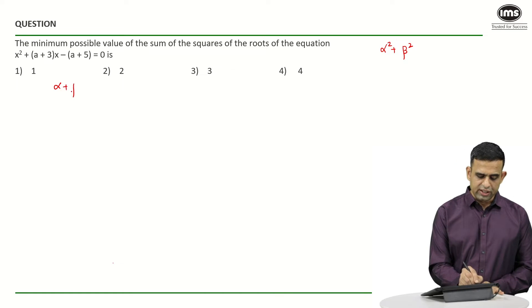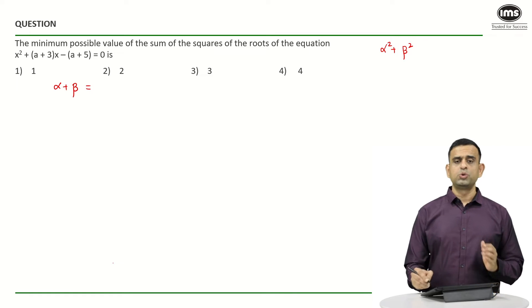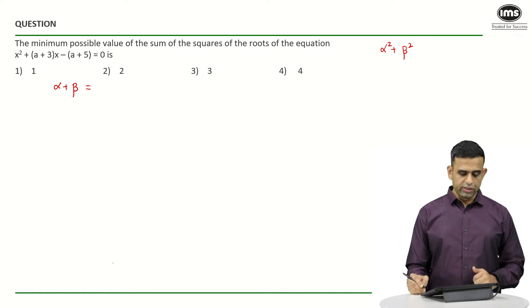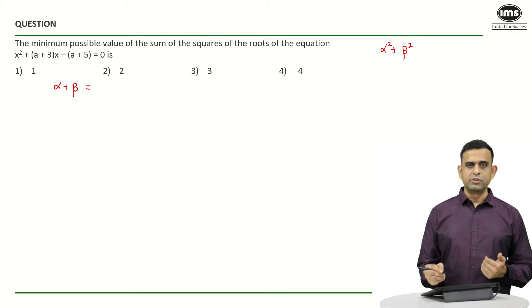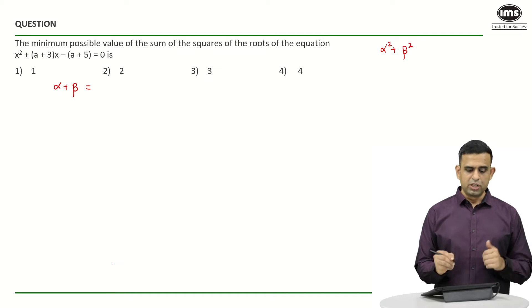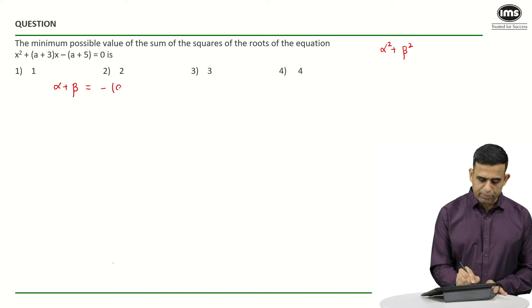So my value of α + β, which should equal -b/a. So in this particular case, your b happens to be a+3, a happens to be 1. So α + β eventually becomes -(a+3).